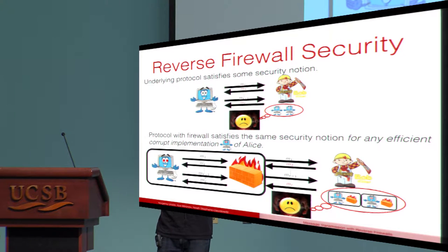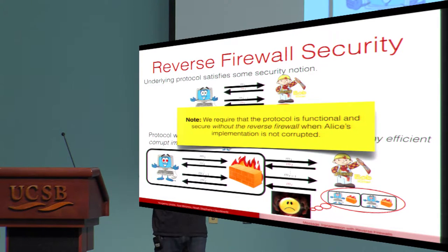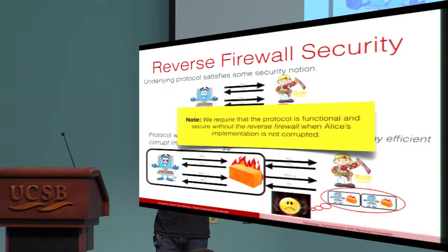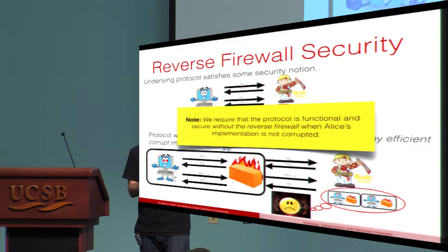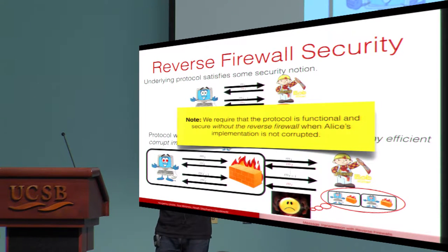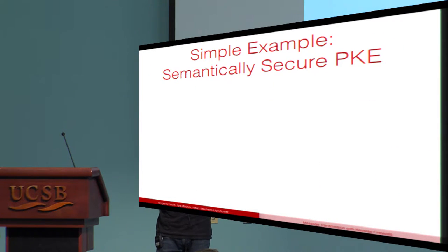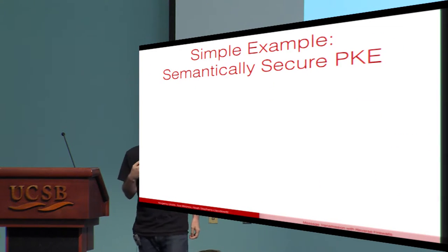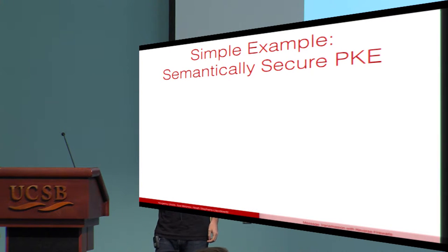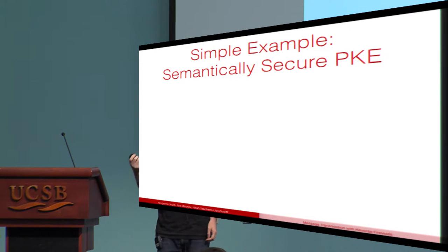An important design decision: the protocol should be functional and secure even without the firewall present. We want there to be an underlying protocol with both functionality and security guarantees. Going back to our earlier example: in the algorithm substitution attack model, semantically secure public key encryption is impossible because it requires randomness. But with a firewall, it's actually rather trivial.